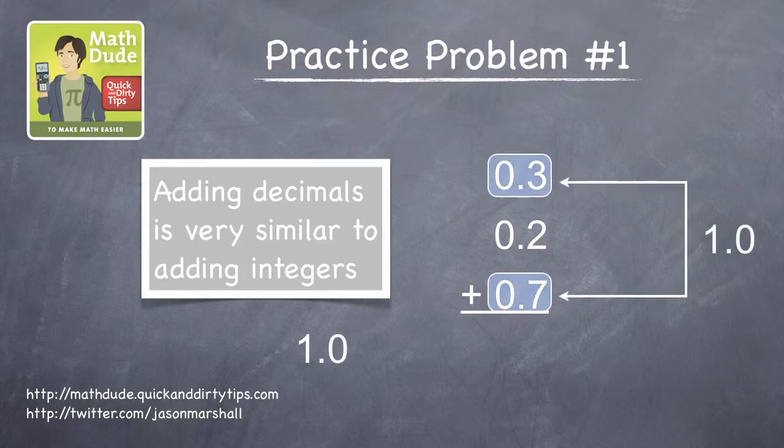3 and 7 add to 10. But in this case, since we're actually adding 0.3 and 0.7, we get 1.0. Now, all we have to do is add this to the remaining 0.2 and we get the final answer, 1.2. Essentially it's the same problem as 3 plus 2 plus 7, except with a decimal point.